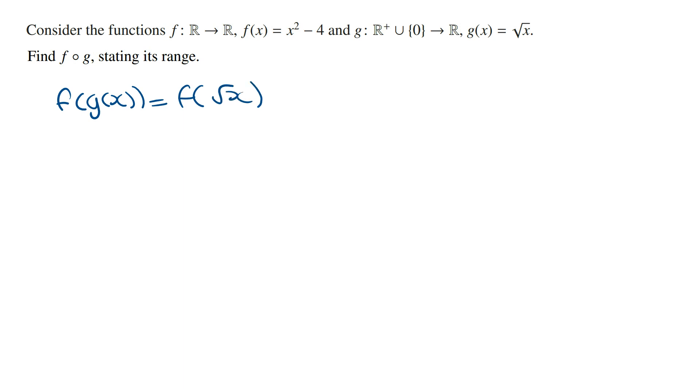And so from here all we need to do is wherever we have x in the rule of f of x, we replace it with the square root of x. And so this is going to be the square root of x all squared minus 4, which is going to be x minus 4.